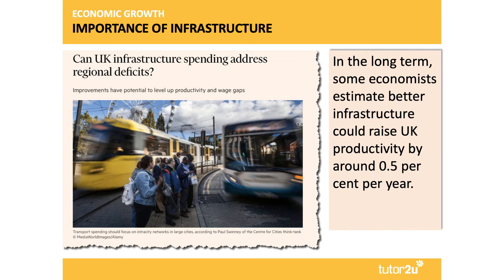In the UK, some economists have argued at the National Institute that if we had better infrastructure, that could lift our productivity — output per worker or output per person hour worked — by around 0.5% per year. That doesn't sound a lot, but going from 2.5% to 3% per year over a number of decades can have a significant effect on GDP and GDP per capita. One of the debates is whether the UK government needs to ramp up its infrastructure spending across all regions and achieve a better regional balance.